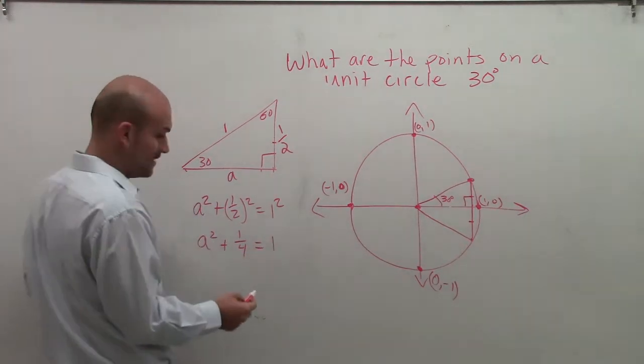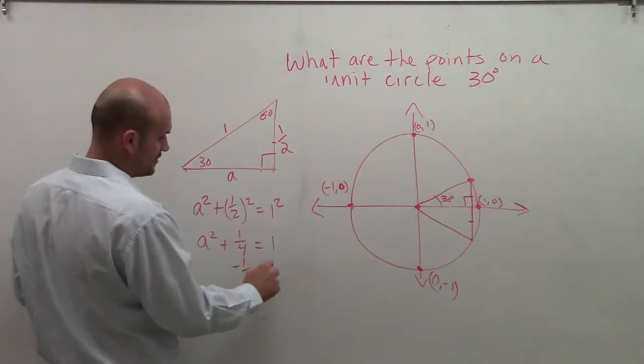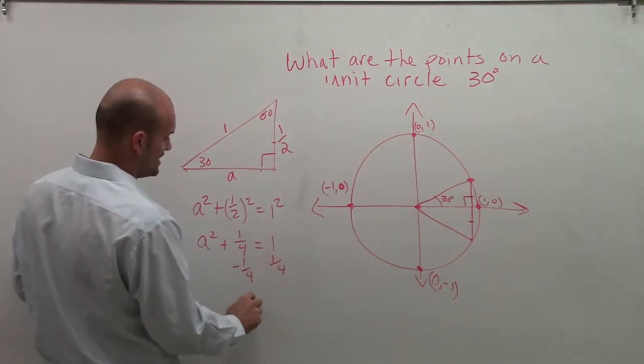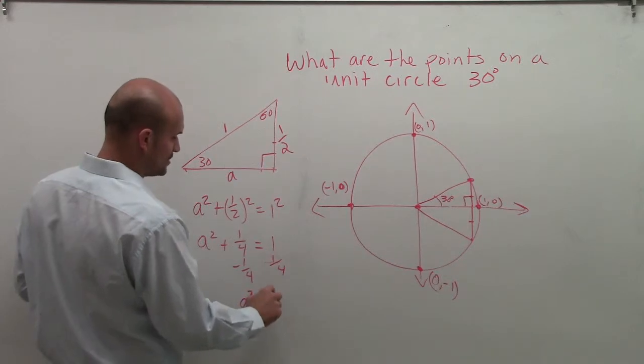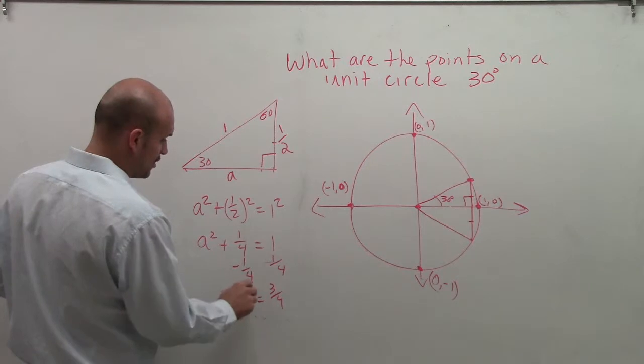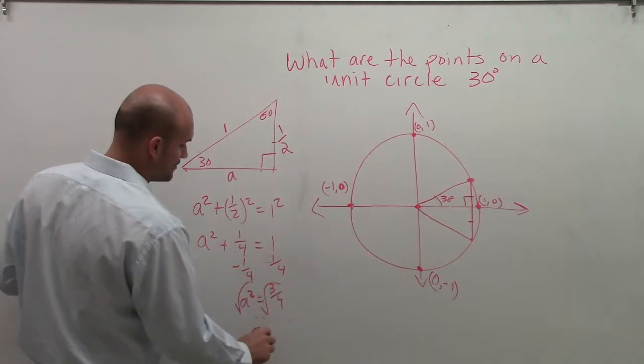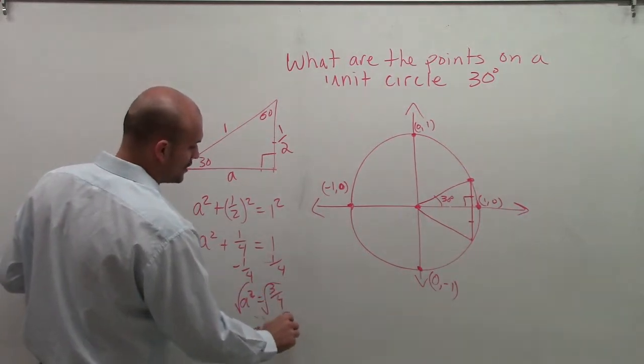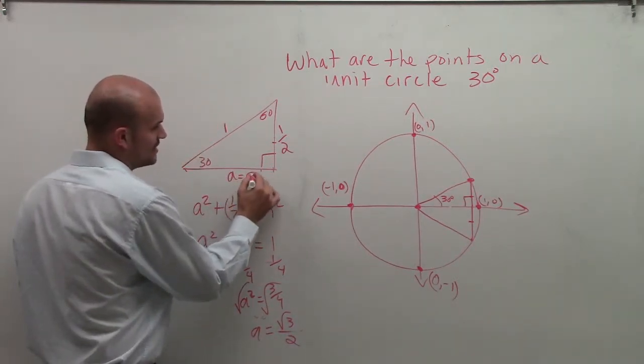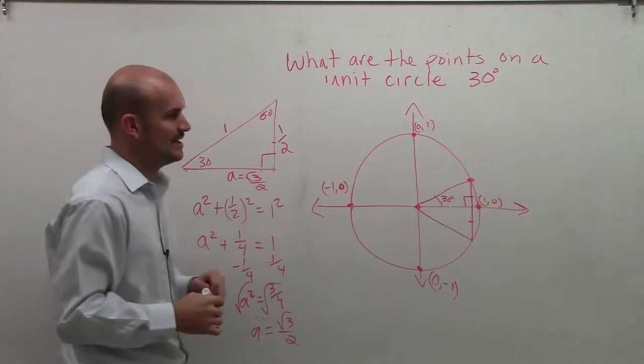Now, to solve for a squared, I'm going to subtract 1 fourth, and I get a squared equals 3 fourths. Now what I'm going to do is solve for a by taking the square root, and I'm going to end up getting a equals the square root of 3 divided by 2.